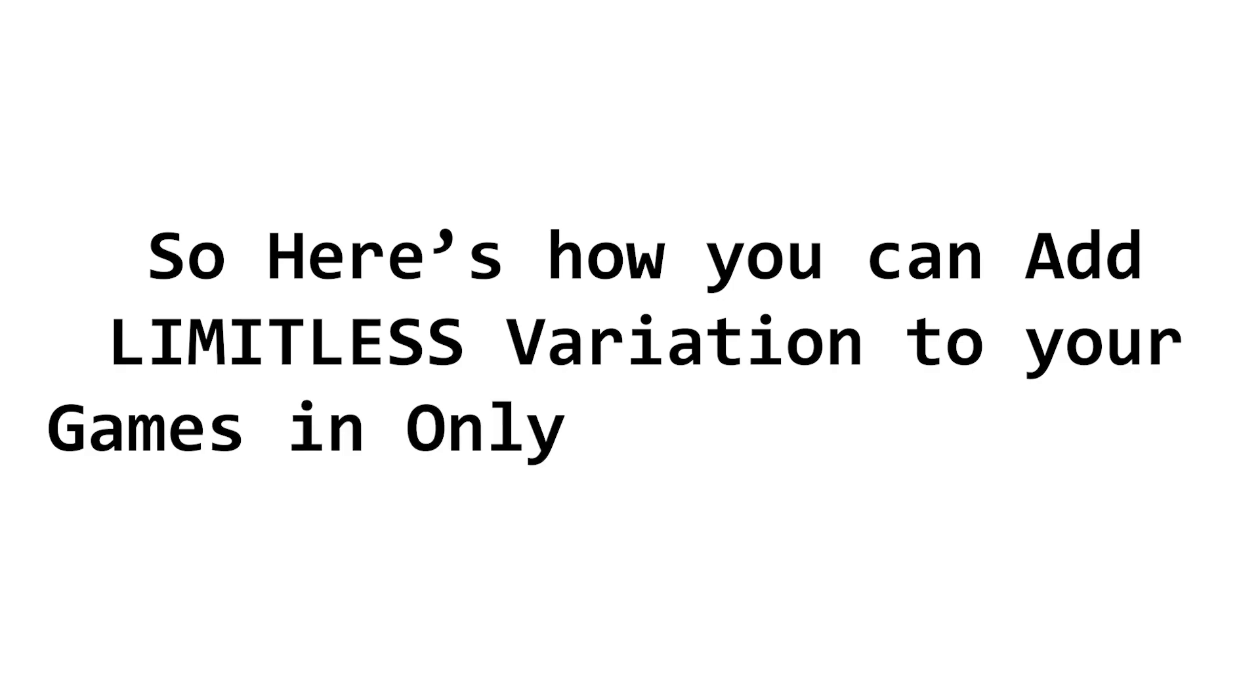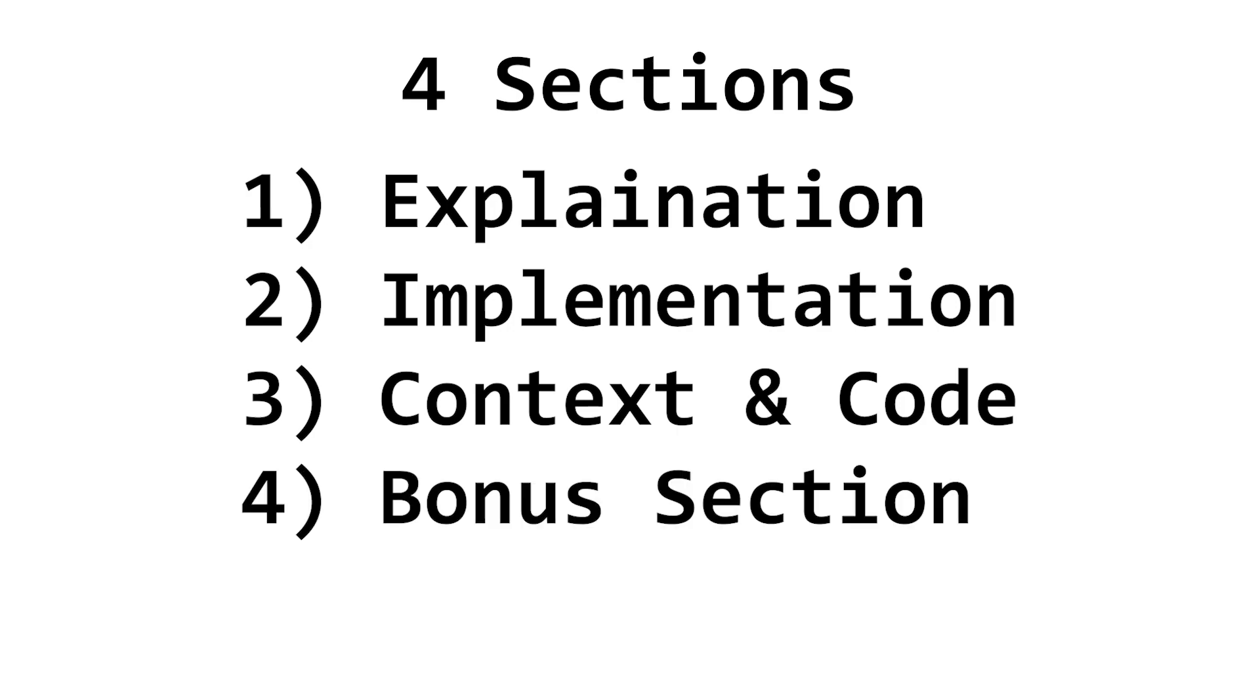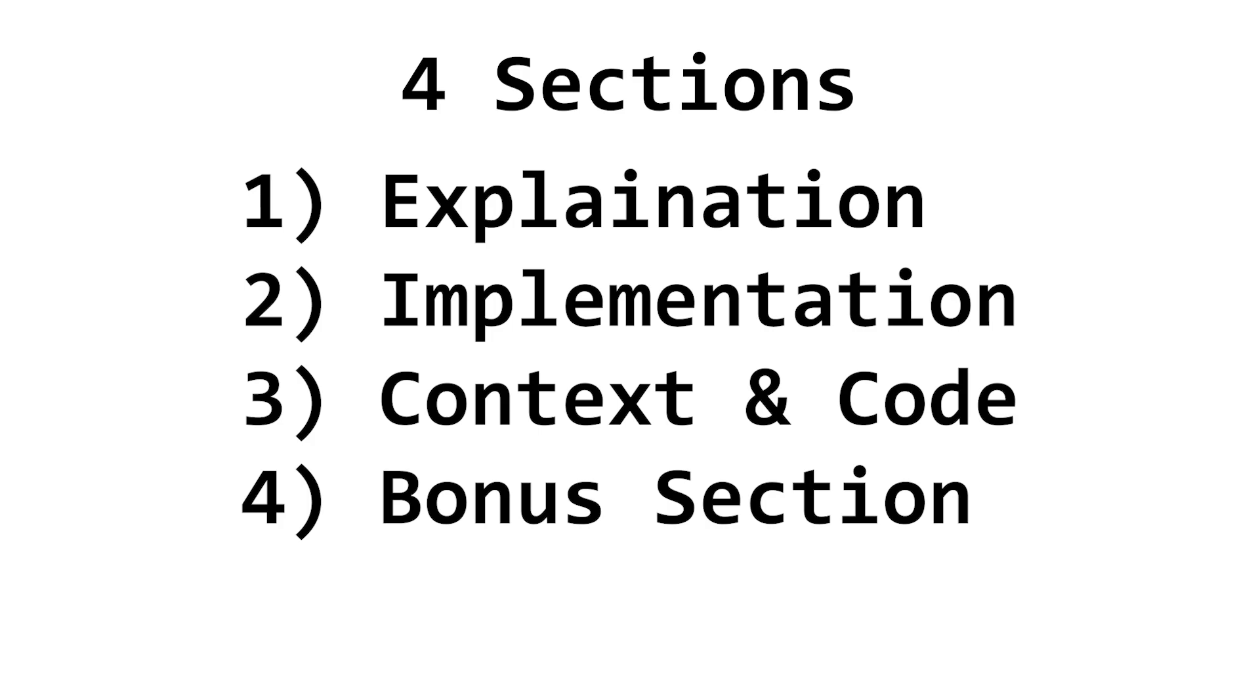So here's how you can add limitless variation to your games with only one line of code. This video is broken up into four distinct sections. The first one will be about how normal distributions work. The second will be about how to easily implement what we learned in section one into our games. The third section will provide some more context and explain how the code works, and the fourth section is a top-secret bonus section that goes into another, more customizable implementation that you do not want to miss.